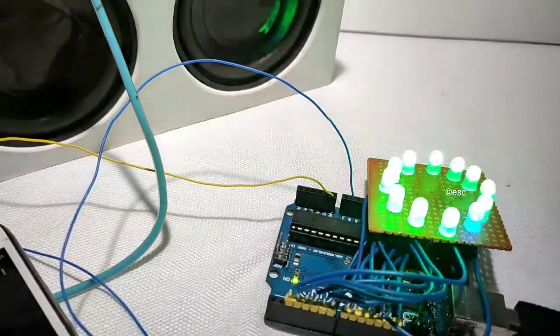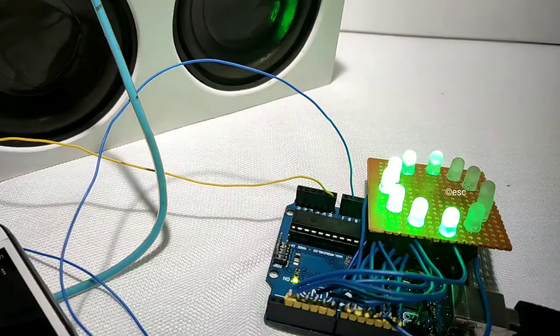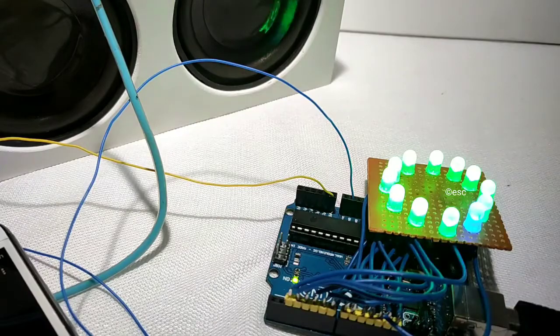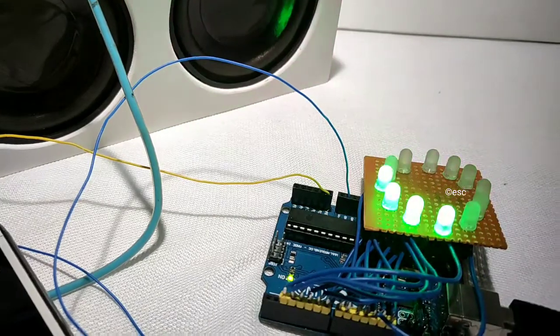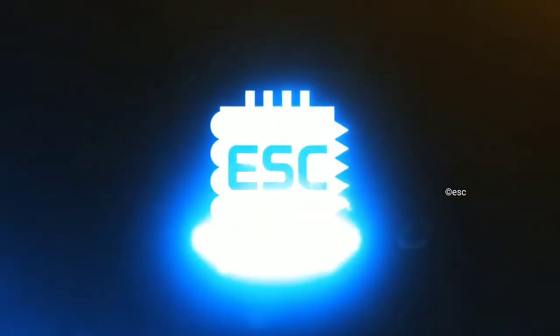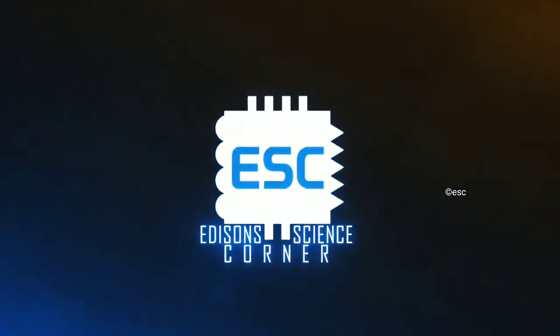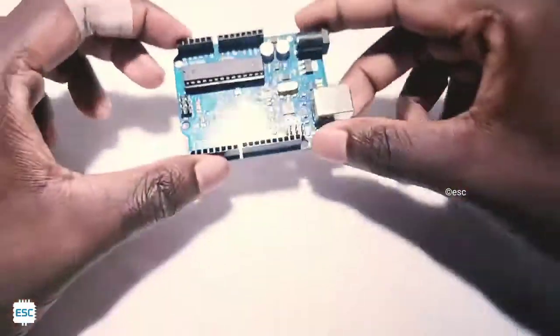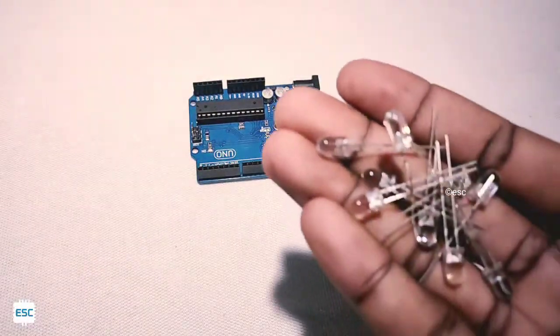Hello friends, in this video tutorial I'm going to show you how to build a VU meter using Arduino. VU stands for voltage unit. Let's get started with this simple project. First we need an Arduino Uno, some LEDs, a breadboard, a dot PCB, and some jumper wires.